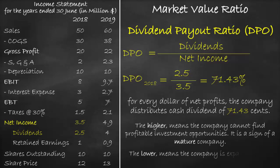A lower dividend payout ratio means the company is expanding into more projects. It is a sign of a growth company.